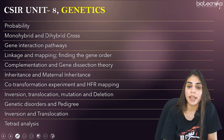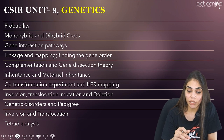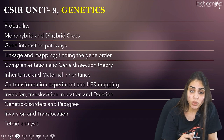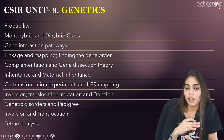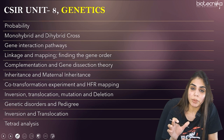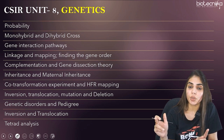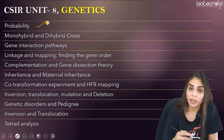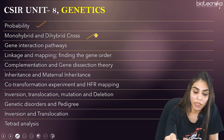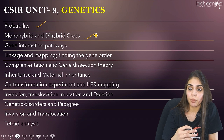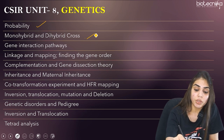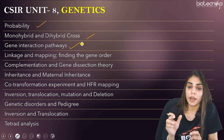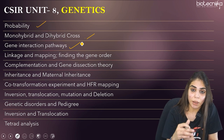Coming to Unit 8, Genetics. The most important topic is probability — every exam asks you to calculate the probability of an F1 hybrid from a cross. Learn monohybrid and dihybrid cross ratios. Gene interaction pathways are also very important — learn about epistasis. They will give you a diagram and you have to analyze it and answer the question.